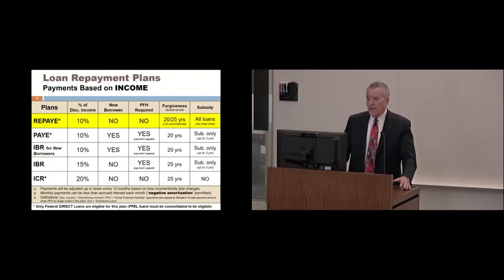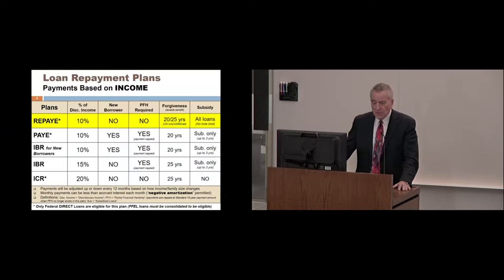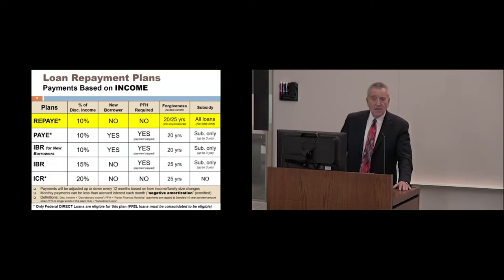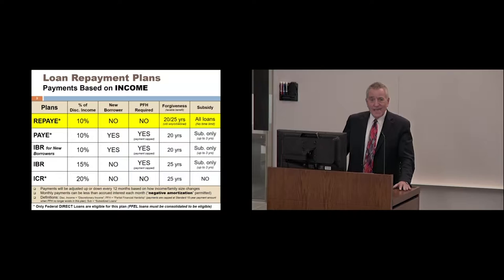How does REPAYE compare to the other income-driven plans, where payments are based upon a percentage of your household's annual discretionary income? Looking at a comparison chart where the plans are listed in reverse chronological order: the newest income-driven plan is REPAYE, or Revised Pay As You Earn. The oldest is the ICR plan — Income Contingent Repayment — created back in 1994. In 2007, the Income Based Repayment plan, or IBR, was created. That was improved upon to create IBR for New Borrowers, then Pay As You Earn, or PAYE. Finally, Revised Pay As You Earn was created in December 2015 so that all borrowers would have access to a 10% income-driven plan.